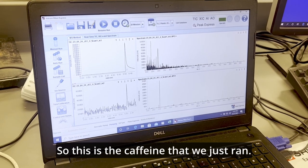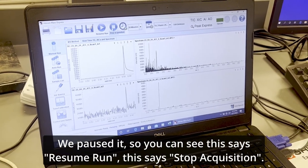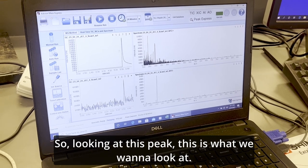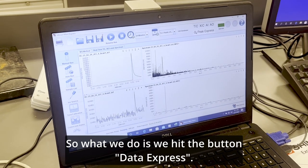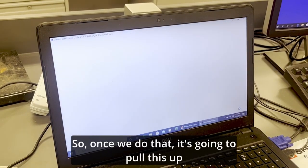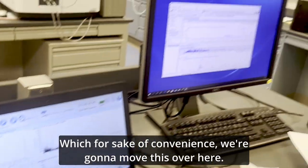So this is the caffeine that we just ran. We paused it. So you can see this says resume run. This is stop acquisition. So looking at this peak, this is what we want to look at. So what we do is we hit the button data express. So once we do that, it's going to pull this up, which for sake of convenience, we're going to move this over here.